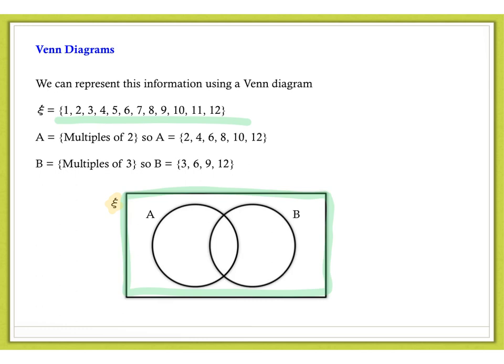Now, you'll notice that there is a section of overlap in between the two subsets. So, this will contain any items that are in set A and in set B. So, that refers to 6 and it refers to 12. So, they belong here in the intersection or the overlap.